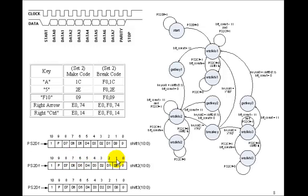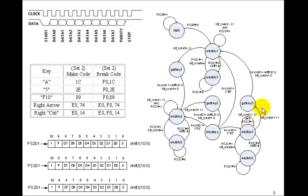Then we go to the break key state, which checks to see if it was a break key. Break keys start with F0. So if the second byte shifted in — shift two — was an F0, we go over and read the third byte, which is going to be the same as the make code, going through two more states. When we get to get key three, that puts D7 to D0 from shift three into key_val_three. So in general, we'll have values for key_val_one, key_val_two, and key_val_three, and then you're ready to press another key. If it was the right arrow key with make code E074, then E0 ends up in key_val_one and 74 in key_val_two. In the break key state, if key_val_one was E0, we go back to the first state, get another E0, then an F0 which takes us to read the third byte, and then we get 74.